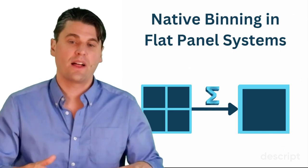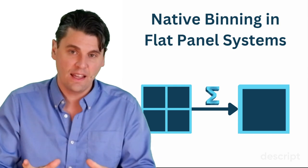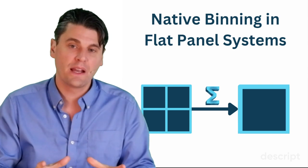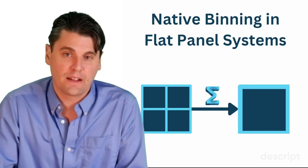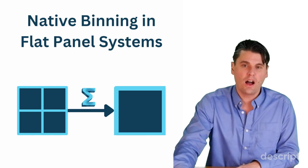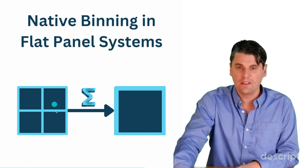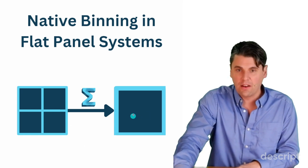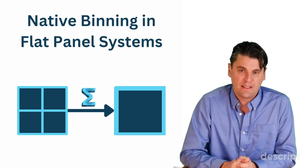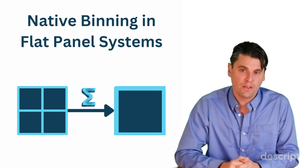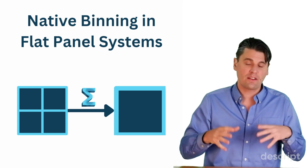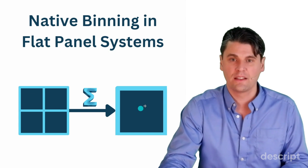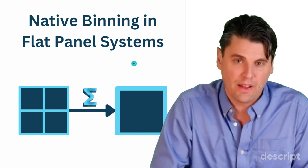A flat panel detector system takes data digitally, and often we're actually binning it because the sensor is larger than the image matrix size we'd like to store. The operation is essentially combining four pixels — adding them up and dividing by the number of pixels — giving us what we call a binned measurement. If we do this for all the pixels, we end up with a matrix size that is one fourth of the original, because four native detector elements generated one output pixel in the image.